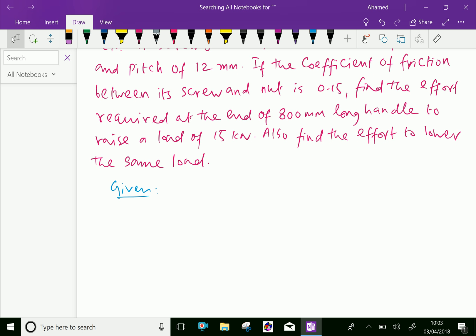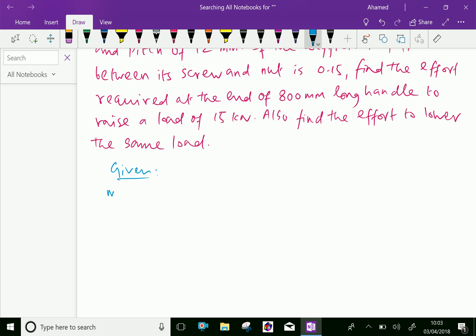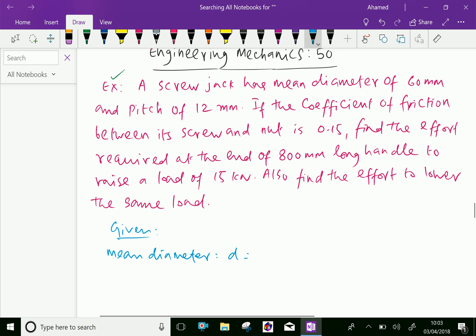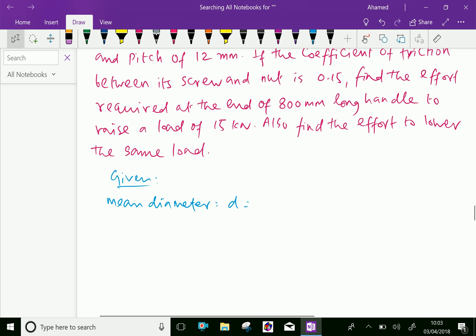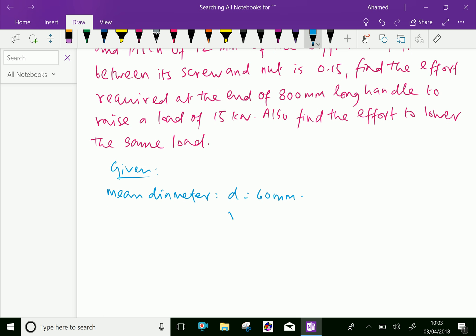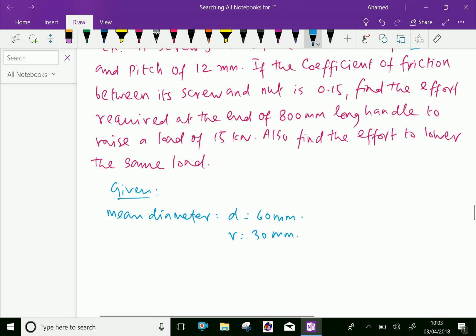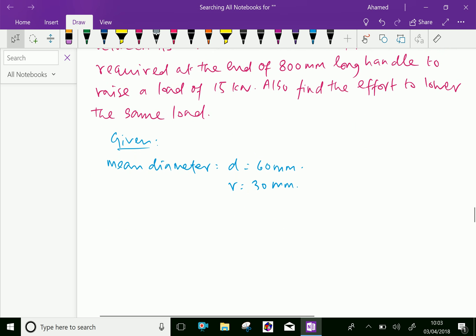Mean diameter of the screw, D equals 60 mm. Therefore, radius R equals 30 mm. And pitch P equals 12 mm.